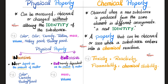Chemical properties — it's a new identity, because the substance has entered into a chemical reaction. The water is no longer water. Examples of chemical properties: toxicity, reactivity, flammability, and chemical stability.